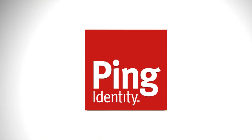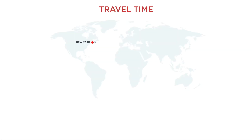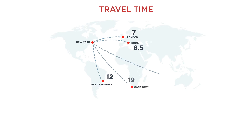Guard against fraudsters and malicious attacks with the GeoVelocity Anomaly Rule. A GeoVelocity Anomaly occurs when a user logs in from a location in which the travel time between the current login location and the previous login location is not possible in the time that's elapsed since the previous login, indicating this could be malicious activity.